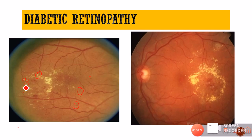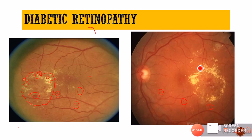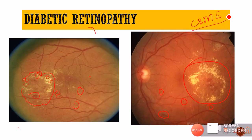These hard exudates are clumped together in the outer plexiform layer. With microaneurysms and hemorrhages present, we can confirm this is diabetic retinopathy. Similarly, in another image the macula is involved with microaneurysms, blot hemorrhages, and a ringed circinate maculopathy indicating chronic leakage — this can also be called CSME, clinically significant macular edema.